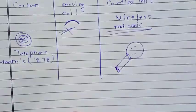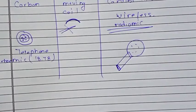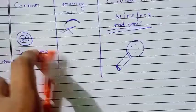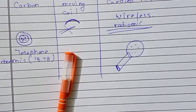Thanks for watching. In the next video, we will talk about types of loudspeakers: direct radiating and horn type loudspeaker, indirect radiating loudspeaker, multi-speaker systems, hi-fi stereo, and Dolby systems.